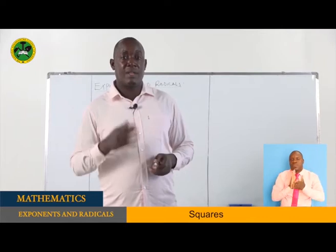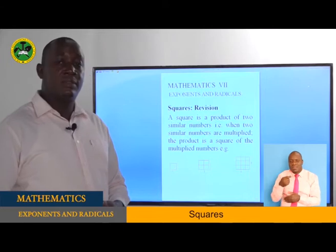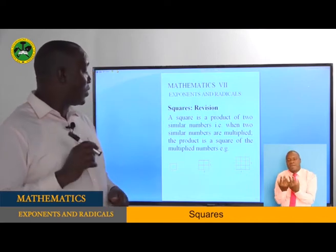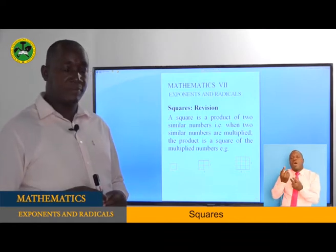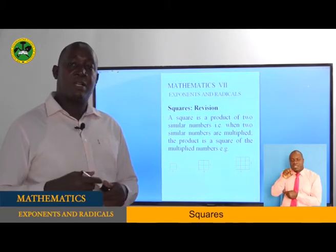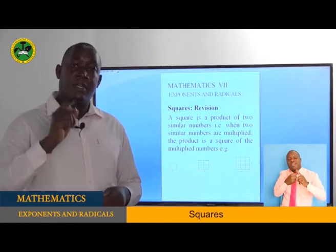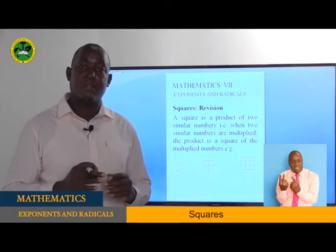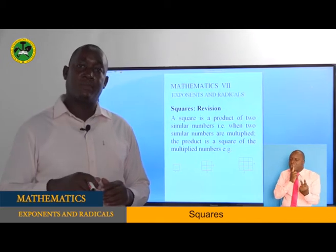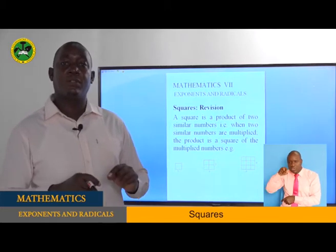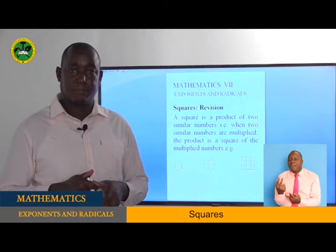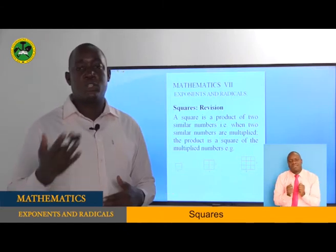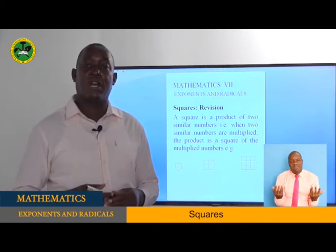To start with, let us see what is a square. A square is a product of two similar numbers. That is, when two similar numbers are multiplied, the product is a square of those multiplied numbers. The answer you get is what we call a square. A square comes from numbers that are of the same kind. We have squares: 1 by 1, 2 by 2, 3 by 3, and so forth, as long as the numbers are similar.